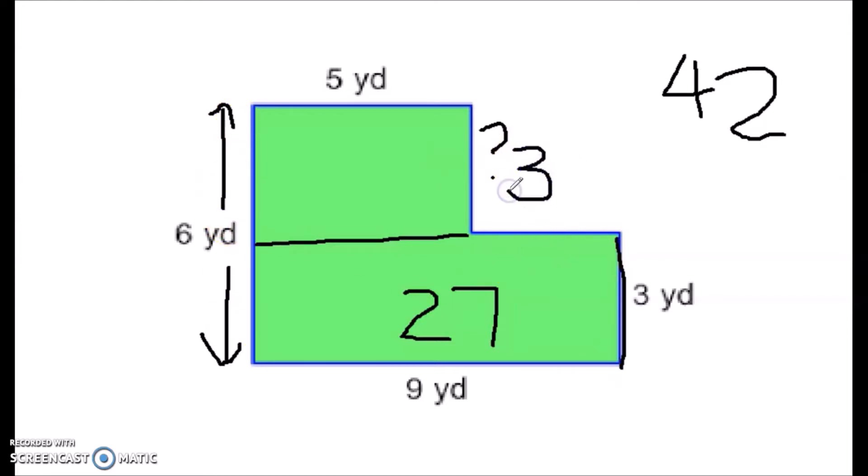So this must be right here. This must be the difference of six minus three. So six minus three is three. So now I can take that five. I can take this three. Five times three is 15. And you guessed it. 15 plus 27 is 42. So we got 42 both ways.